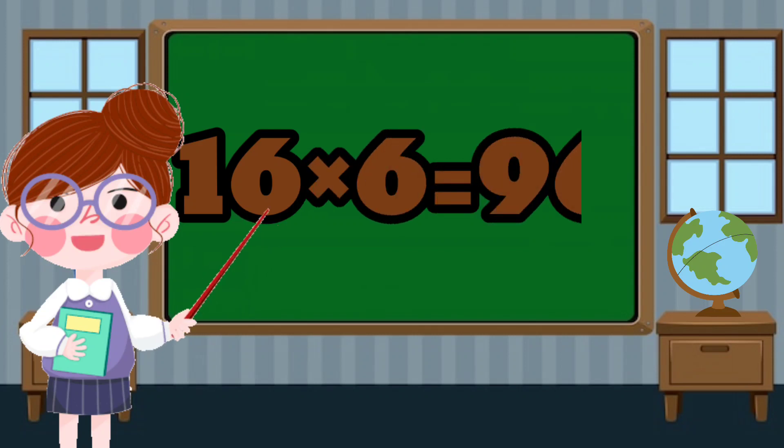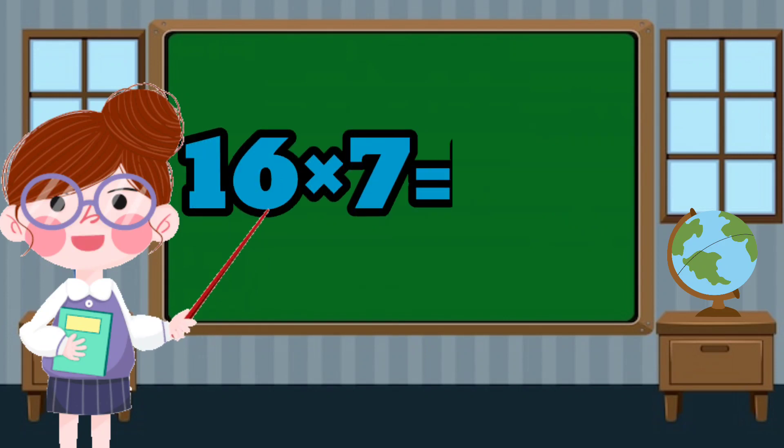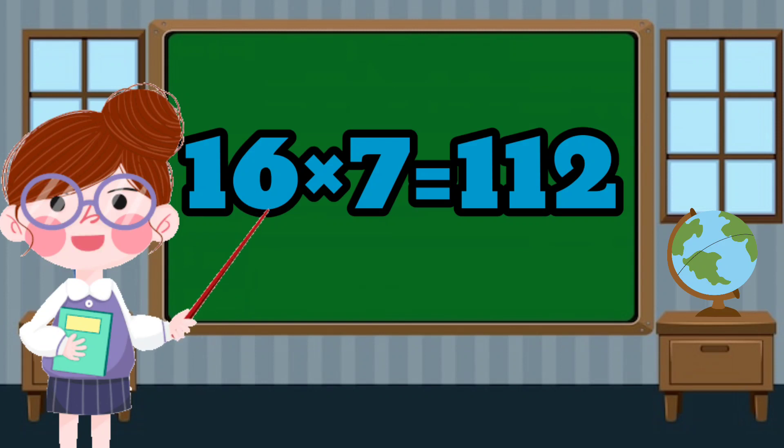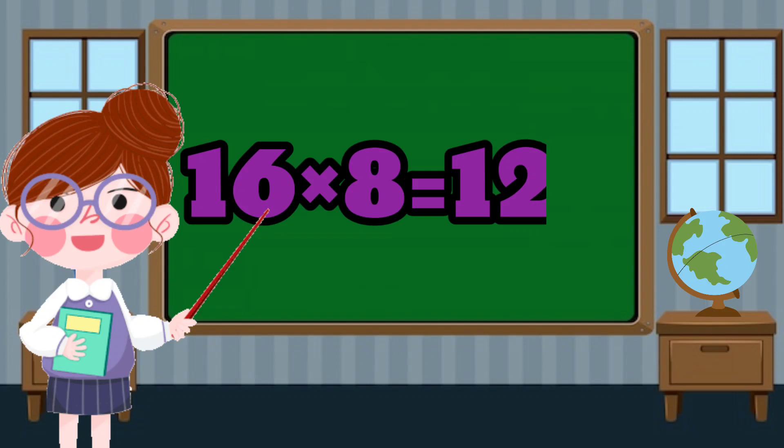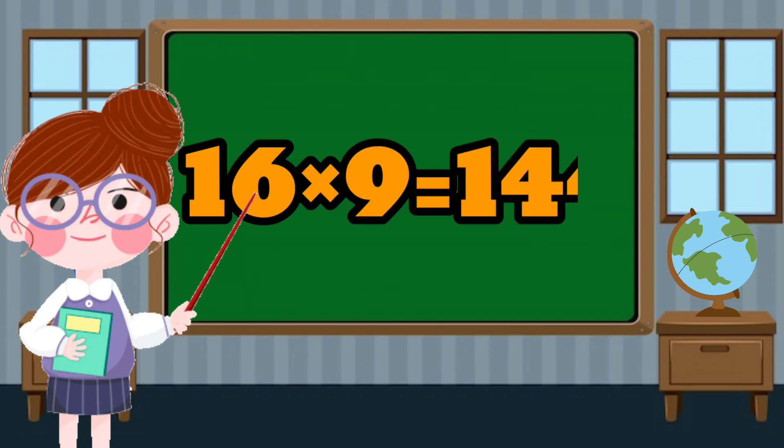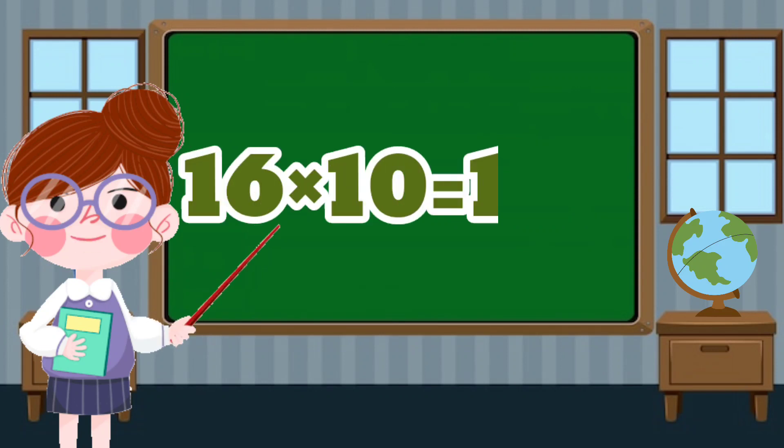16 times 6 equals 96. 16 times 7 equals 112. 16 times 8 equals 128. 16 times 9 equals 144. 16 times 10 equals 160.